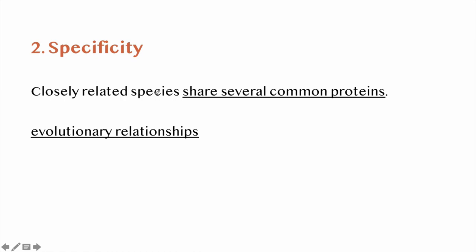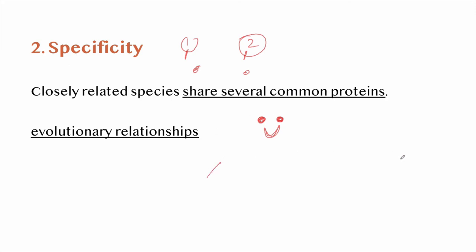Next is specificity. Each species has certain specific proteins not found in others. Closely related species share several common proteins, and the number of common proteins decreases with the increase in dissimilarity between species. This principle is used in determining evolutionary relationships among various groups of plants and animals.